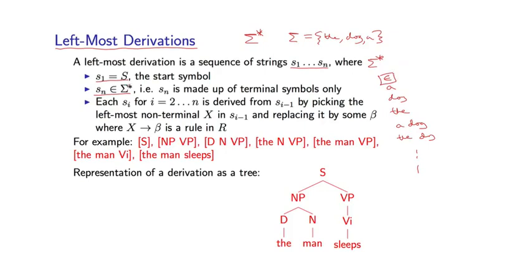So SN has got to be a sentence, for example, the man sleeps, only elements of sigma. And then each intermediate SI for I equals 2 to N is derived from SI minus 1 by picking the leftmost non-terminal X in SI minus 1 and replacing it by some beta where X goes to beta as a rule in R.